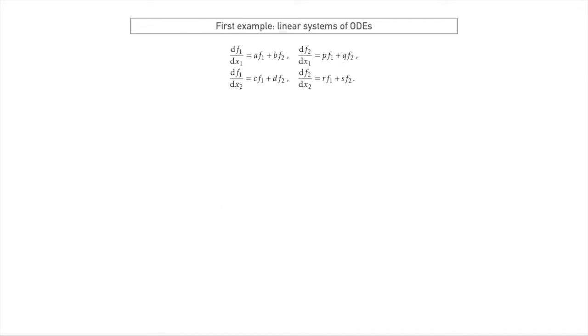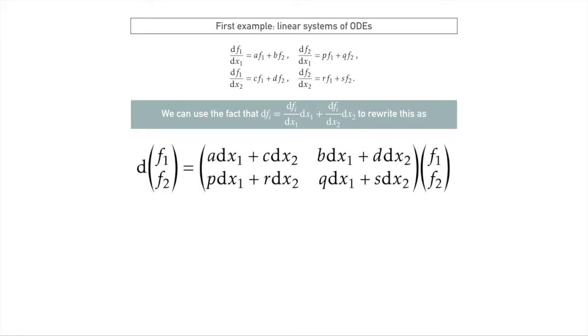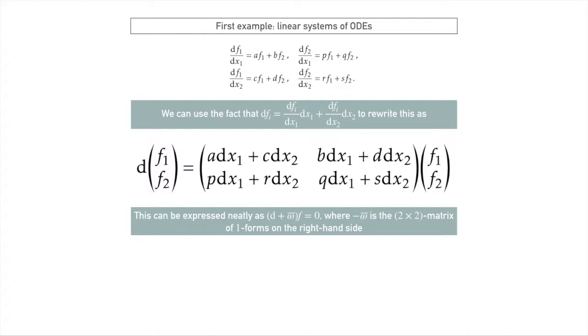The first thing we can do is use the chain rule, which is dfi equals the derivatives times the dxi, and we can rewrite this in a matrix form. This is classic: if you have a linear system of equations, writing it in a matrix is always a good idea because then you can start to use matrix techniques. Given this, we can write it really succinctly as d plus omega bar f equals 0, where omega bar is just exactly this 2x2 matrix of 1-forms. We can say that a connection is exactly something that looks like this: d plus omega bar, where omega bar is a matrix of 1-forms.